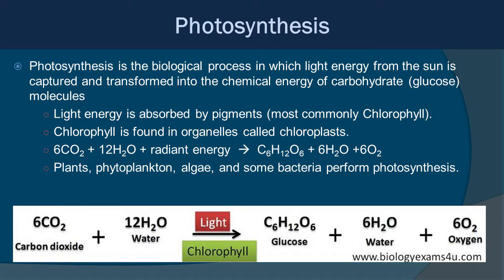Here is the balanced equation for photosynthesis. We have six molecules of carbon dioxide, twelve molecules of water, and then radiant energy in the form of sunlight or, as we'll talk about later, chemical energy. And then you get out one molecule of glucose, six molecules of water, and six molecules of oxygen. Plants, phytoplankton, algae, and even some bacteria perform photosynthesis.